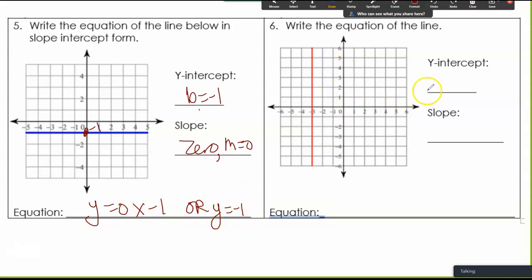Y equals zero x minus 1, or just y equals negative 1. Here, for my y-intercept, I don't have one. I don't cross the y-axis anywhere, so I have no y-intercept. And then my slope is undefined, so I think about this as an x equals. So I just have x equals negative 3. So come to class with questions, and hopefully this is helpful. Thank you.